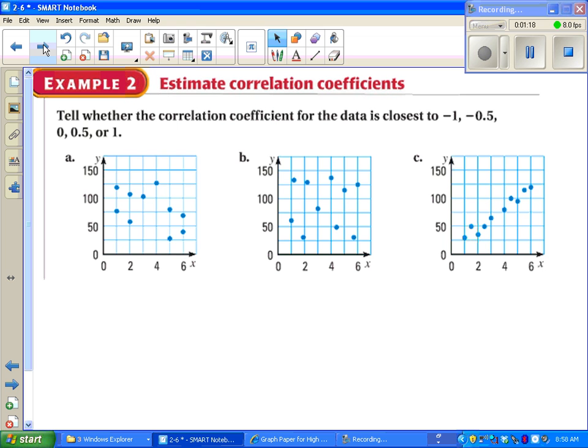Next we're supposed to say whether the correlation looks closer to negative one, negative one-half, zero, one-half, or one. What this means is the more you can, it's really easy to see the negative correlation, you say negative one. If you kind of see a correlation, you might say one-half. If you can't see a correlation at all, we'll say zero.